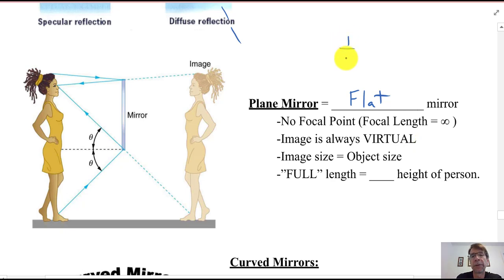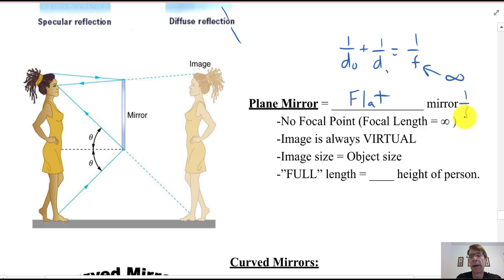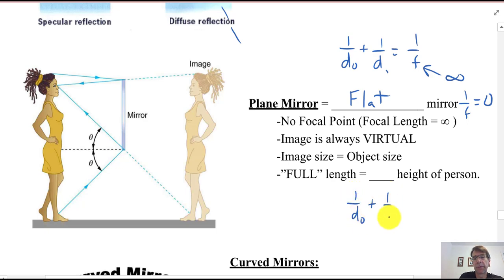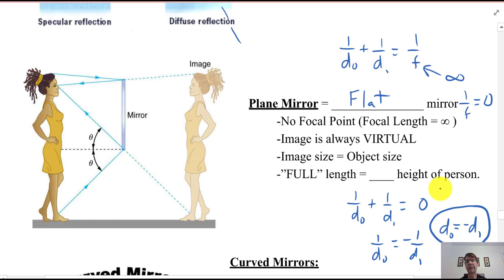Going back to the mirror equation: 1/d_o + 1/d_i = 1/f. If the focal length is infinitely large, then 1/f equals zero. So 1/d_o + 1/d_i = 0, which means 1/d_o = −1/d_i, and therefore d_o = −d_i. In other words, the image and object distances are the same magnitude.